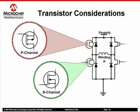The P-channel MOSFET provides the pull-up, or charge current, for the gate capacitance, and the N-channel MOSFET provides the pull-down, or discharge current, for the external gate capacitance.